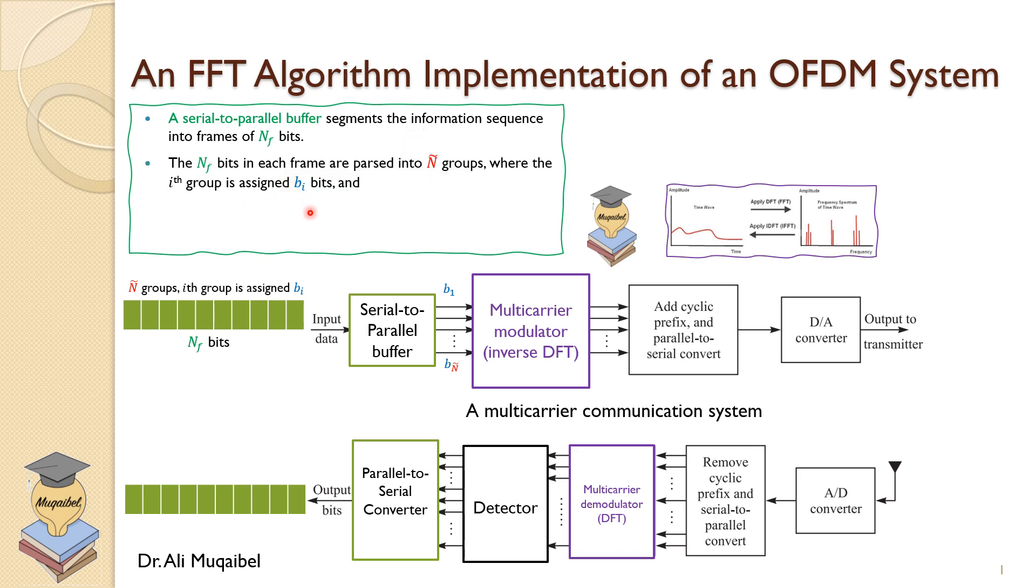We can say that the sum of the bits in every parallel branch will equal to the total number of bits. So the sum from 1 to N-tilde of b_i equals N_F. That makes sense.